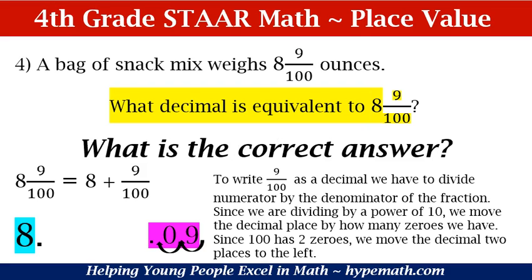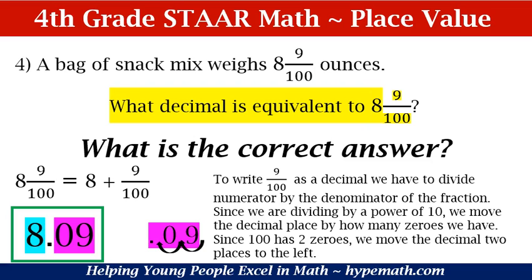What is the correct answer? All we need to do is put it all together. Can you tell me what the decimal equivalent of 8 and 91 hundredths is? If you said 8.91 — high five — you are correct. Once we moved our decimal place two places to the left, all we had to do is put our fraction part on the right-hand side of the decimal point. Good job.